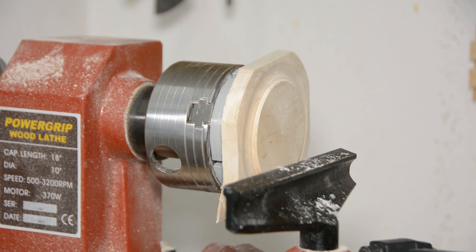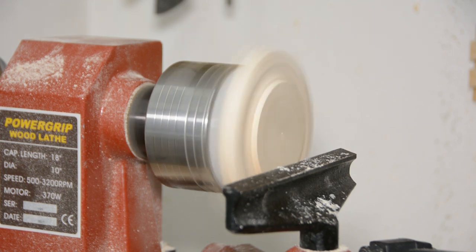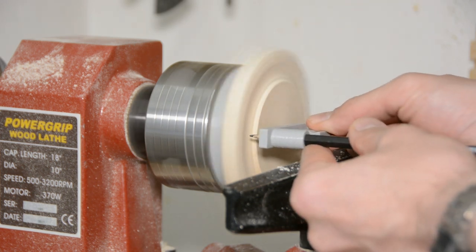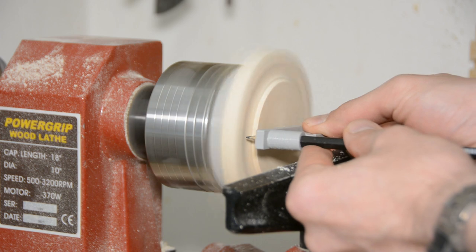For marking the outer diameter, I came up with another simple jig that takes a pencil and when I align the tip with the center of the workpiece, it marks a precise 95mm wide circle.